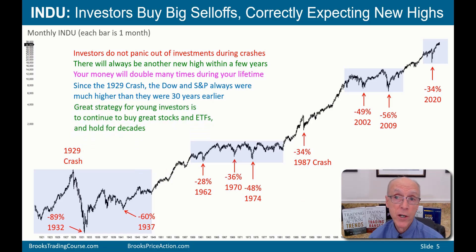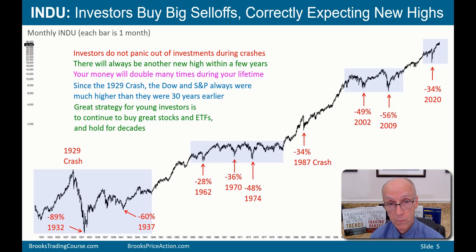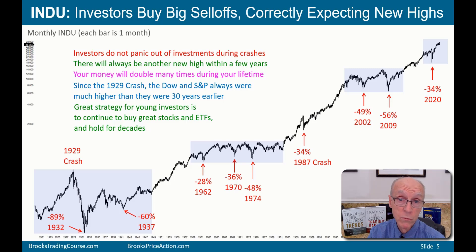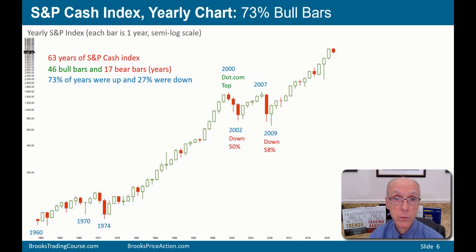The reason you buy on sell-offs is because the market has been going up for 100 years — in fact, since the beginning of civilization. Since the 1929 crash, at any point the market has been higher than it was 20 or 30 years earlier, and sometimes many times higher. A great strategy for young investors is to buy stocks and ETFs and hold for decades. If you're 20, 30, or 40 years old, you'll be shocked at how much money you'll have, because the market will just keep doubling every decade or two.